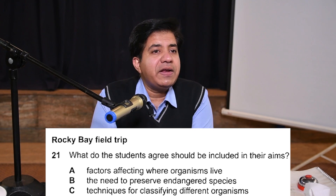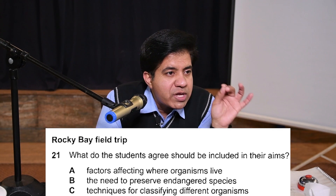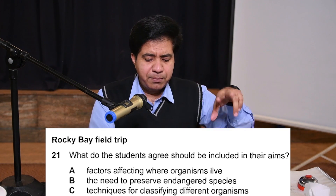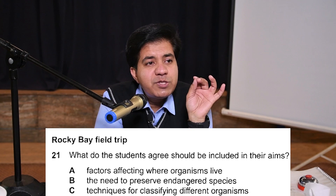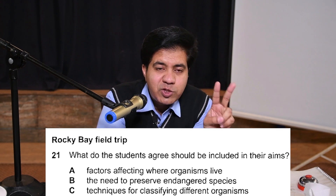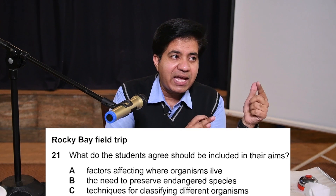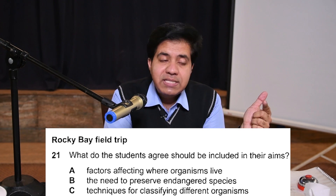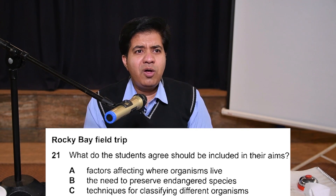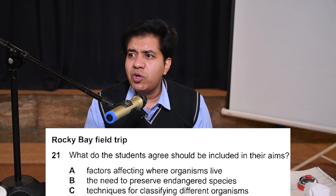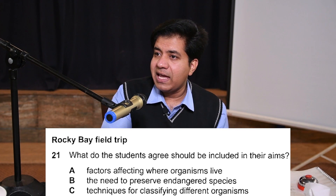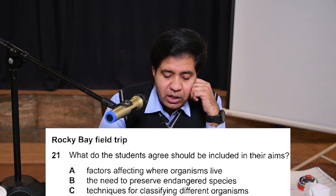Question 21: What do the students agree? For multiple choice in Part 3, two or three question types are very important — number one is 'agree,' number two is 'decide.' Listen to both speakers. If the second speaker agrees, they'll say 'yes, you're right' or 'I agree.' If they disagree, they won't say 'I disagree' directly — they'll say something like 'I have a different approach' or 'I think about it in a different way.'